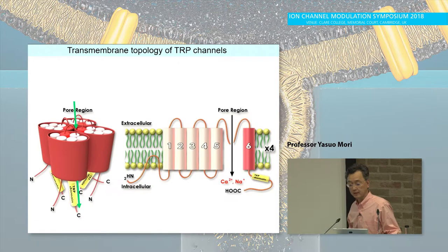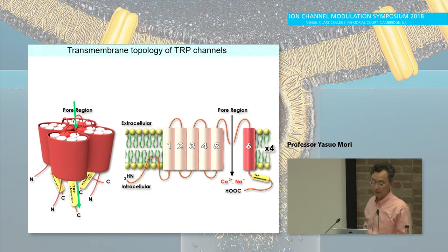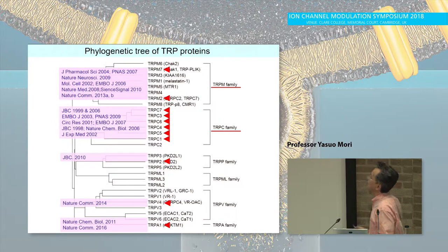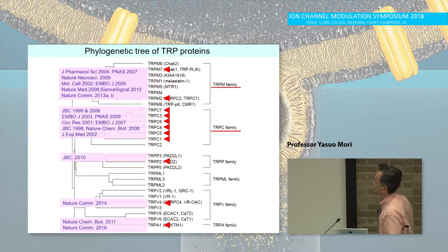Structurally, TRP channels have a six-transmembrane helix, which basically forms calcium, sodium, and cation-permeable ion channels. In our lab, we have been mainly focused on the TRPM family and TRPC family for nearly 20 years, but occasionally I go to different subtypes of both TRP channels, and today I'm going to talk on TRPA1 and TRPV4.